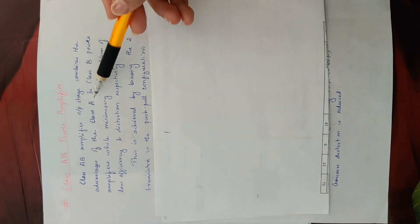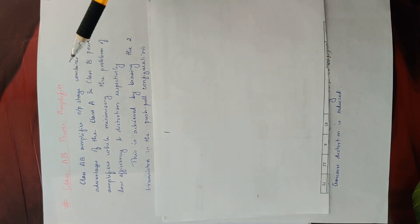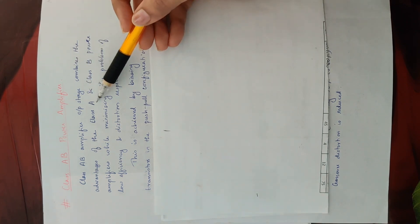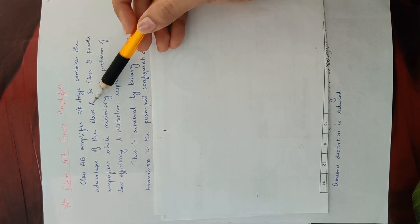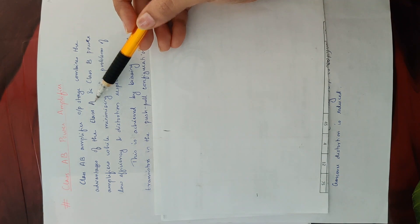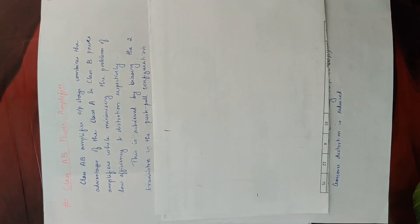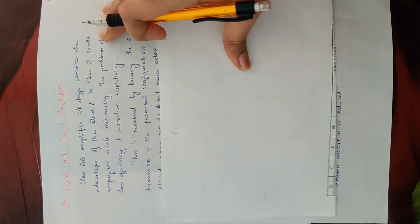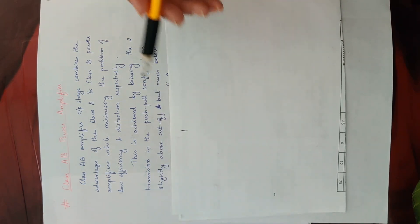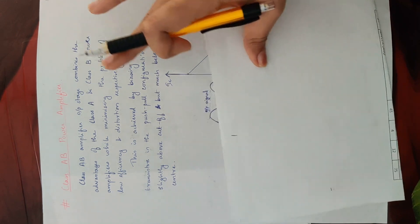In Class AB, we fix the biasing at a specific point. In Class A, we fix the Q-point at the center of the load line. In Class B, we fix it at the cutoff region — on the x-axis. Now we are going to draw the figure of IC versus VCE to illustrate this.